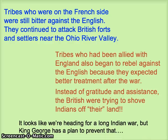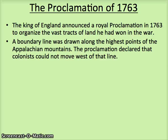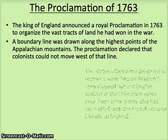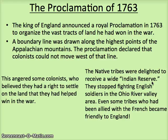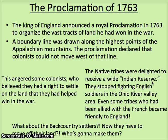It looked like Britain was heading into a long war against Indian tribes, but King George III of England had a plan to prevent that — the Proclamation of 1763. He made a royal proclamation, a big announcement, to organize the vast tracts of land won in the war. A boundary line was drawn along the highest points of the Appalachian Mountains, and it declared that colonists cannot move west of that line. The native tribes on both sides were delighted — they had a wide so-called Indian reserve and stopped fighting English soldiers. Even some tribes who had been on the French side ended up allying with England. But this left some very angry colonists, who believed they had the right to settle that land, and backcountry settlers wondering whether they'd have to move off their land and who would even make them.